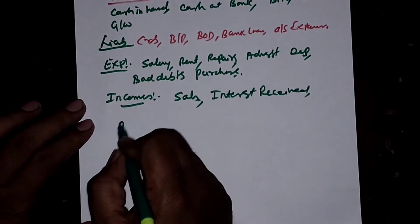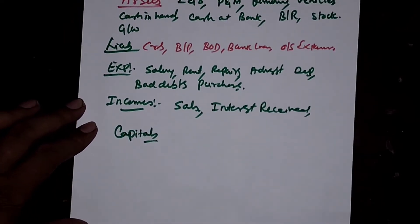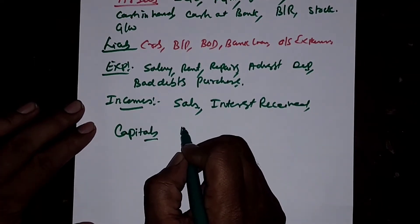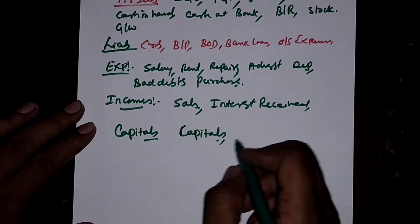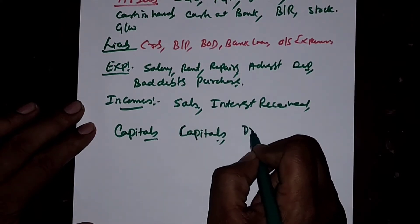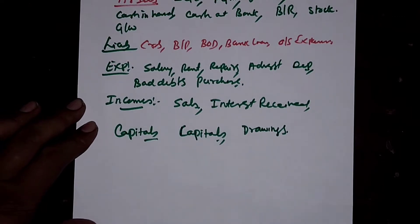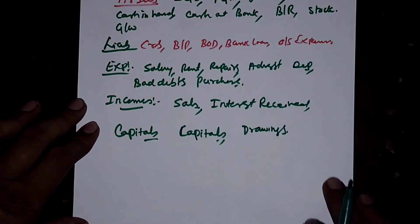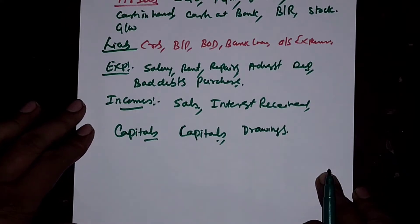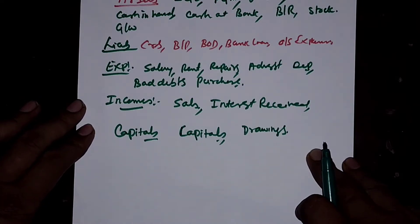Next, Capitals. Under Capitals, we record the Capital Investment of the Owners and the Drawings made by the Owners. These are very few items given here; plenty of entries will be appearing in this concept.